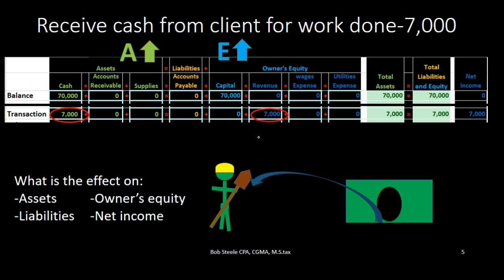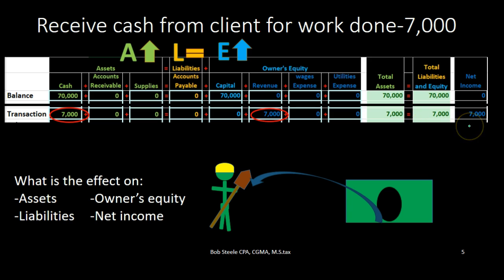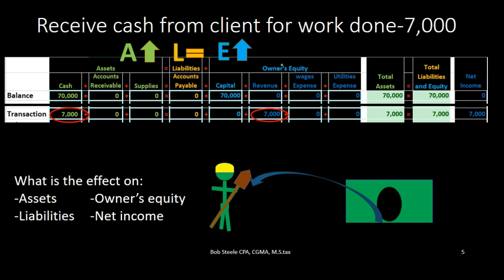If assets increase and equity increases, what happens to liability? It's going to stay the same. We know that assets equal liabilities plus owner's equity. We also know that net income increased from this transaction, because if we look at the income statement accounts — revenue minus expenses — revenue went up, so income went up as well. The whole income statement being part of owner's equity in this case.